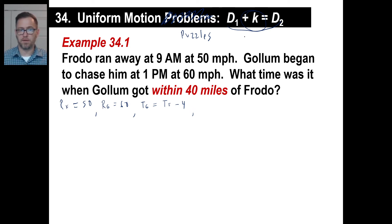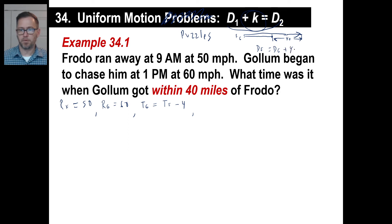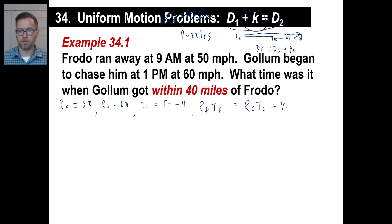Let's draw this. Here's Frodo — he's running. Here's Gollum starting from the same place chasing him. The question is what time was it when Gollum got within 40 miles of Frodo. Looking at the picture, the distance of Frodo equals the distance of Gollum plus 40. Converting to rate times time: rate of Frodo times time of Frodo equals rate of Gollum times time of Gollum plus 40.